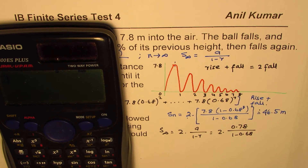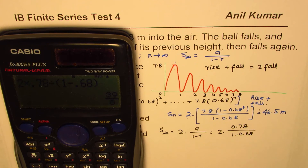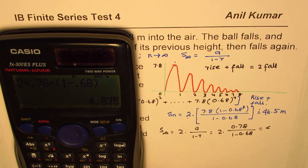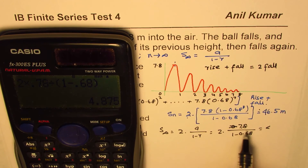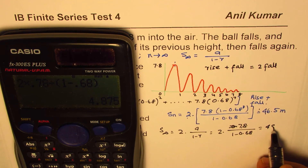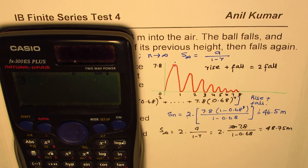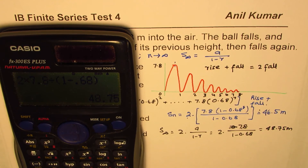Computing: two times 7.8 divided by (1 minus 0.68). I initially wrote 0.78 by mistake — that should be 7.8. So redoing the calculation: two times 7.8 divided by (1 minus 0.68) equals 48.75 meters.